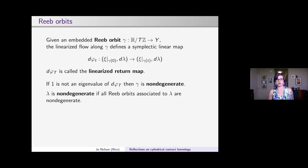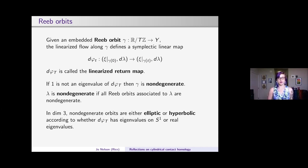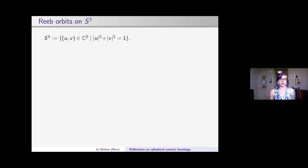With a non-degenerate contact form, all Reeb orbits are isolated. In dimension three, non-degenerate orbits classify as either elliptic or hyperbolic. Elliptic orbits have eigenvalues that are complex conjugates on S¹; hyperbolic orbits have real eigenvalues — negative hyperbolic if real and negative, positive hyperbolic if real and positive.